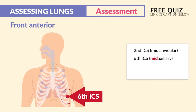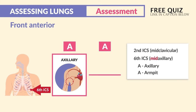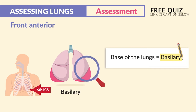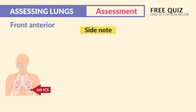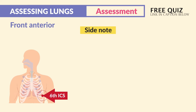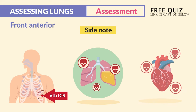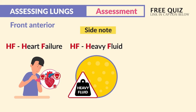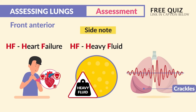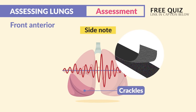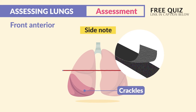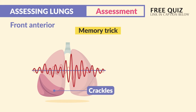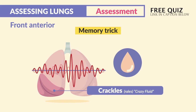Continue down to the sixth ICS mid-axillary — mid-axillary meaning the middle of the armpit: A for axillary, A for armpit. This assesses the lower lobes, also called the bases or basilar portions of the lungs. This is the best place to assess for fluid in the lungs with heart failure patients. The lung sounds to listen for are crackles, which sound like velcro being pulled apart. The memory trick: crackles are for crazy fluid.